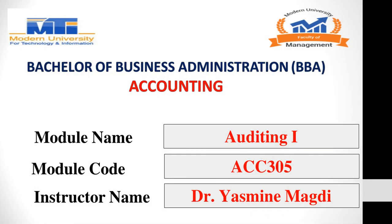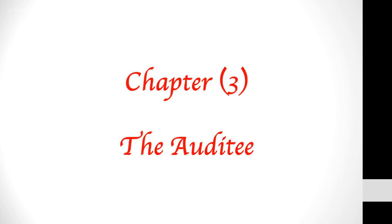Good morning. Today we are going to continue with our course Auditing 1. In this lecture we are going to discuss Chapter 3, the auditee — meaning we are going to discuss the characteristics of the auditing client. This chapter is divided into three parts: part one, internal control system; part two, internal audit; and part three, fraud and errors. Let's start with part one, internal control system.